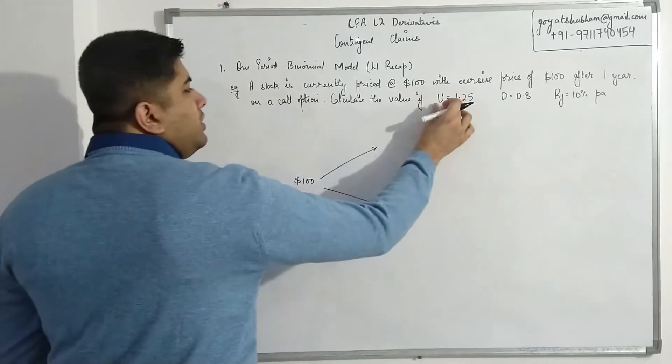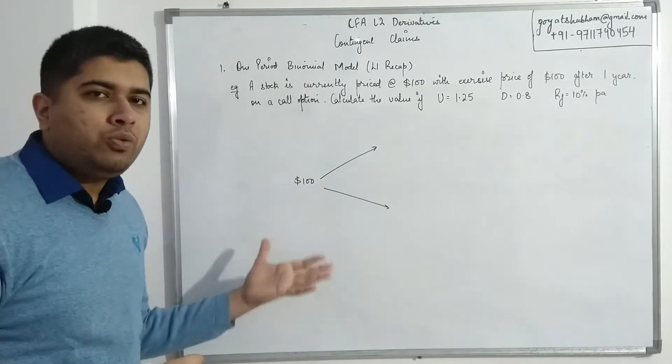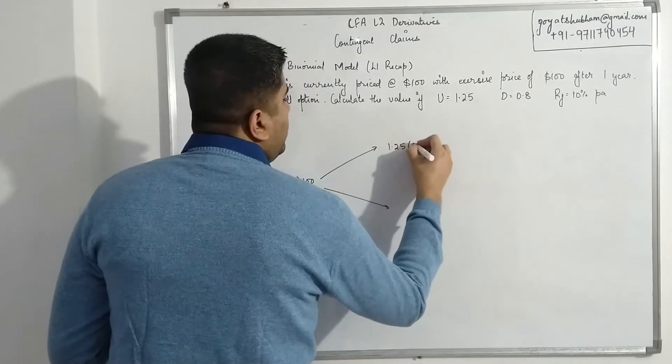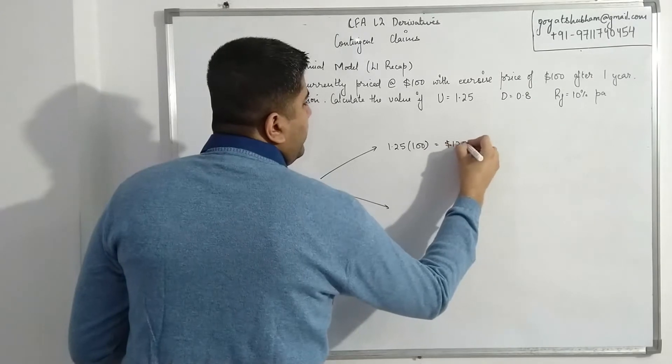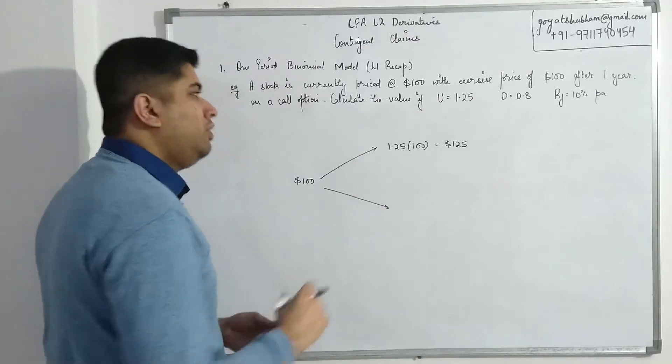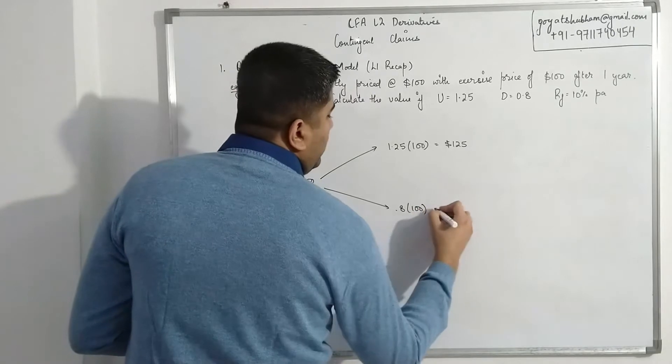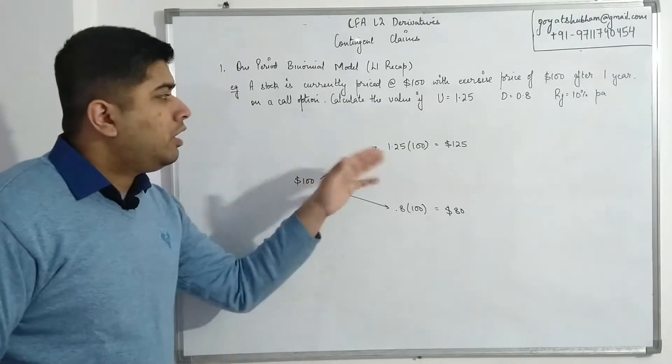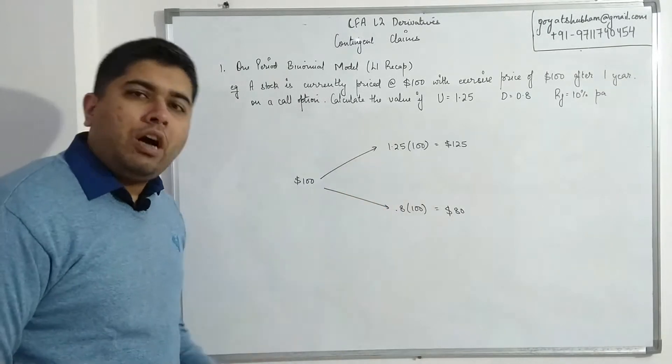U represents the size of up move, so if my price increases, by how much will that price increase? This will be 1.25 of my initial price, so 125 dollars. And D represents size of down move, that would be 0.8 multiplied with 100. So if the price falls, it will fall to 80. If the price increases after one year, it will increase to 125 dollars. Binomial says there are only these two possible outcomes.